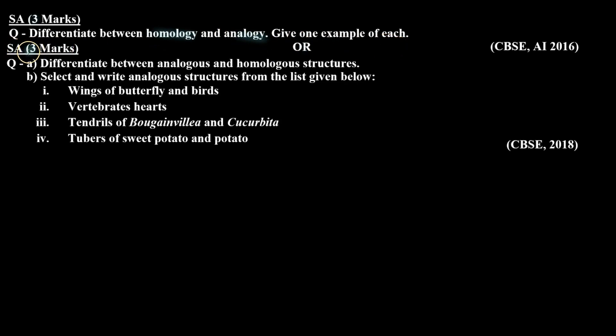And the second type is short answer type question of three marks which was asked in the CBSE board 2018. And the question is part A differentiate between analogous and homologous structures, and part B select and write analogous structures from the list given below.